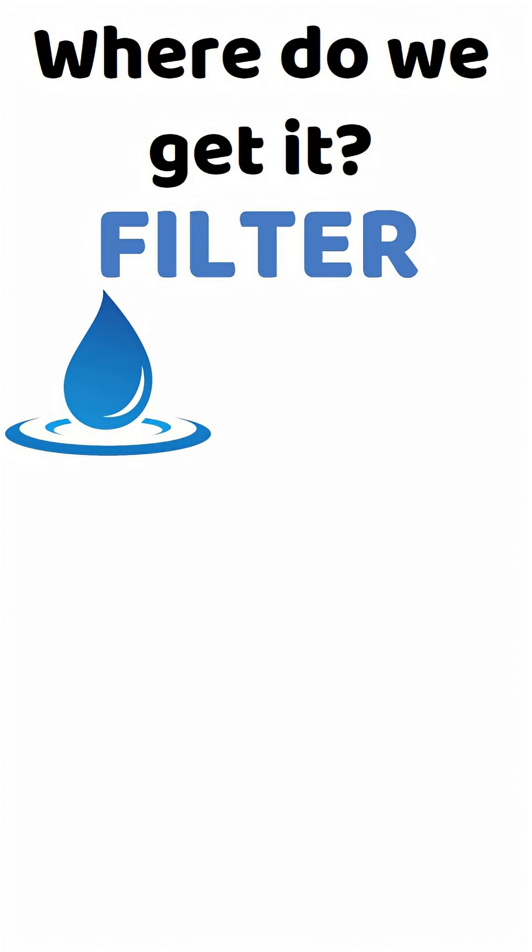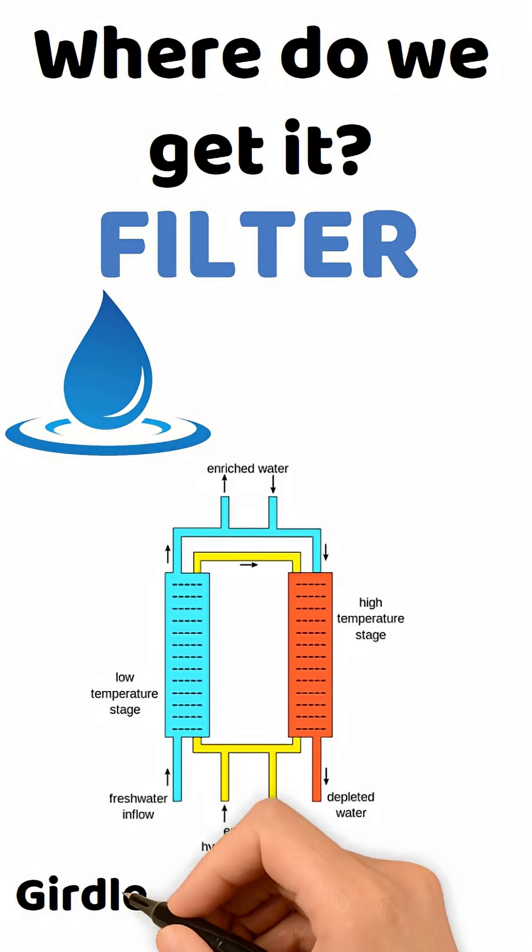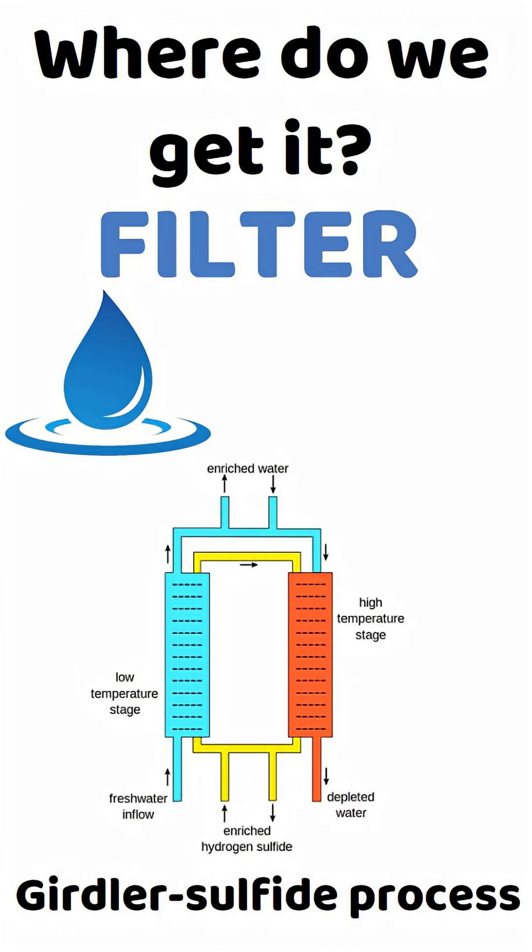It's super rare in normal water. So, in these giant towers, we use a complex process called the girdler sulfide process to separate the heavy water from the normal water, or light water, drop by drop.